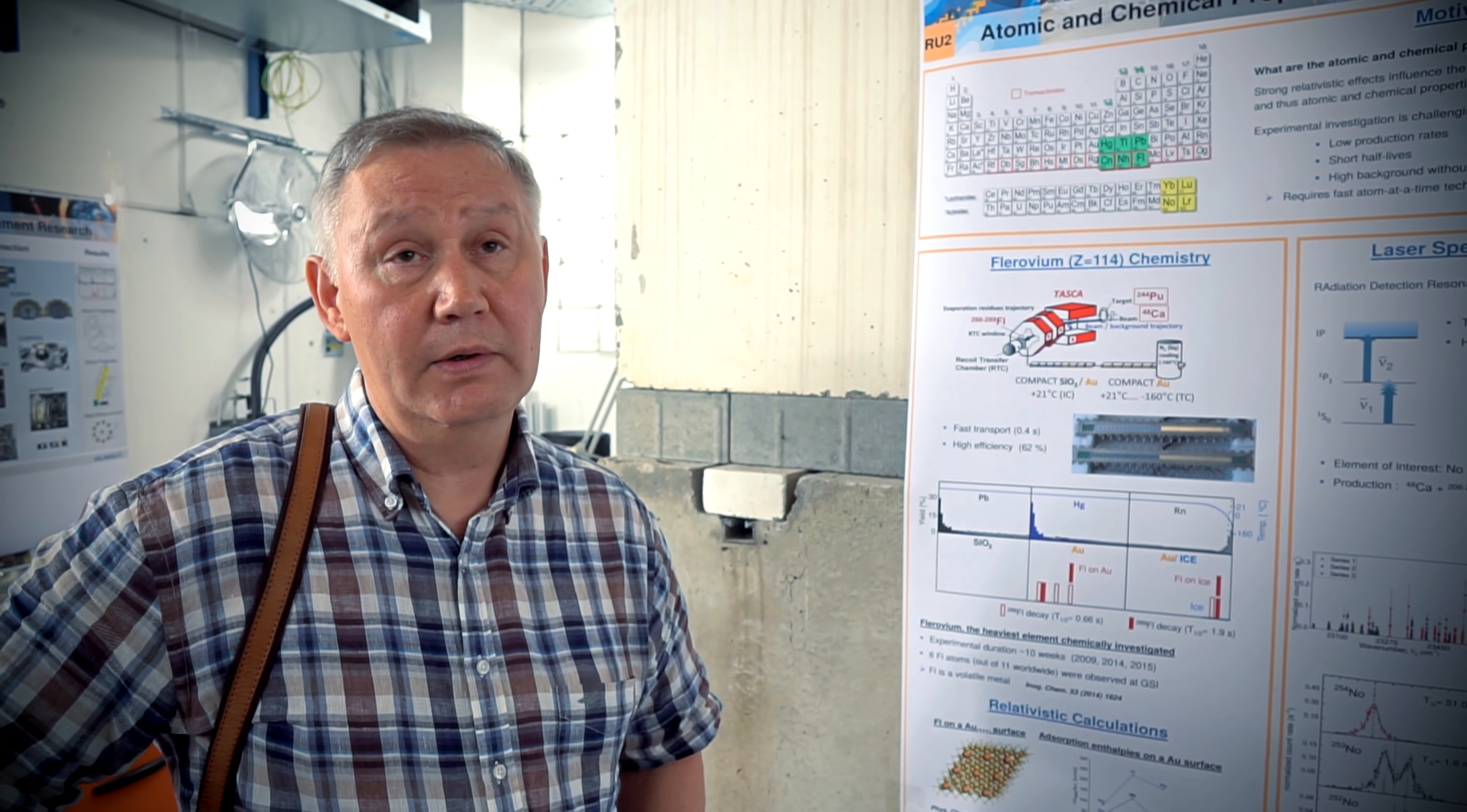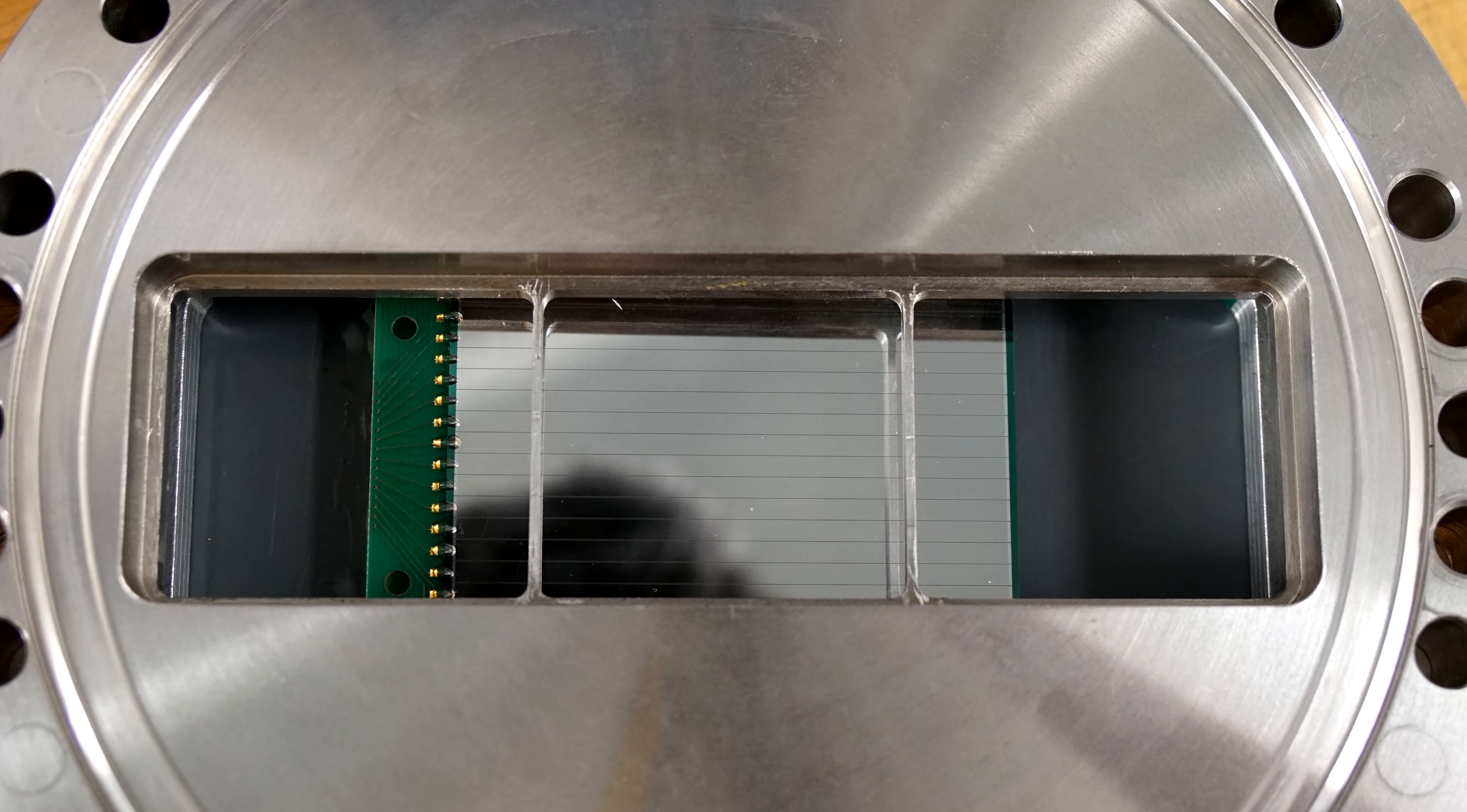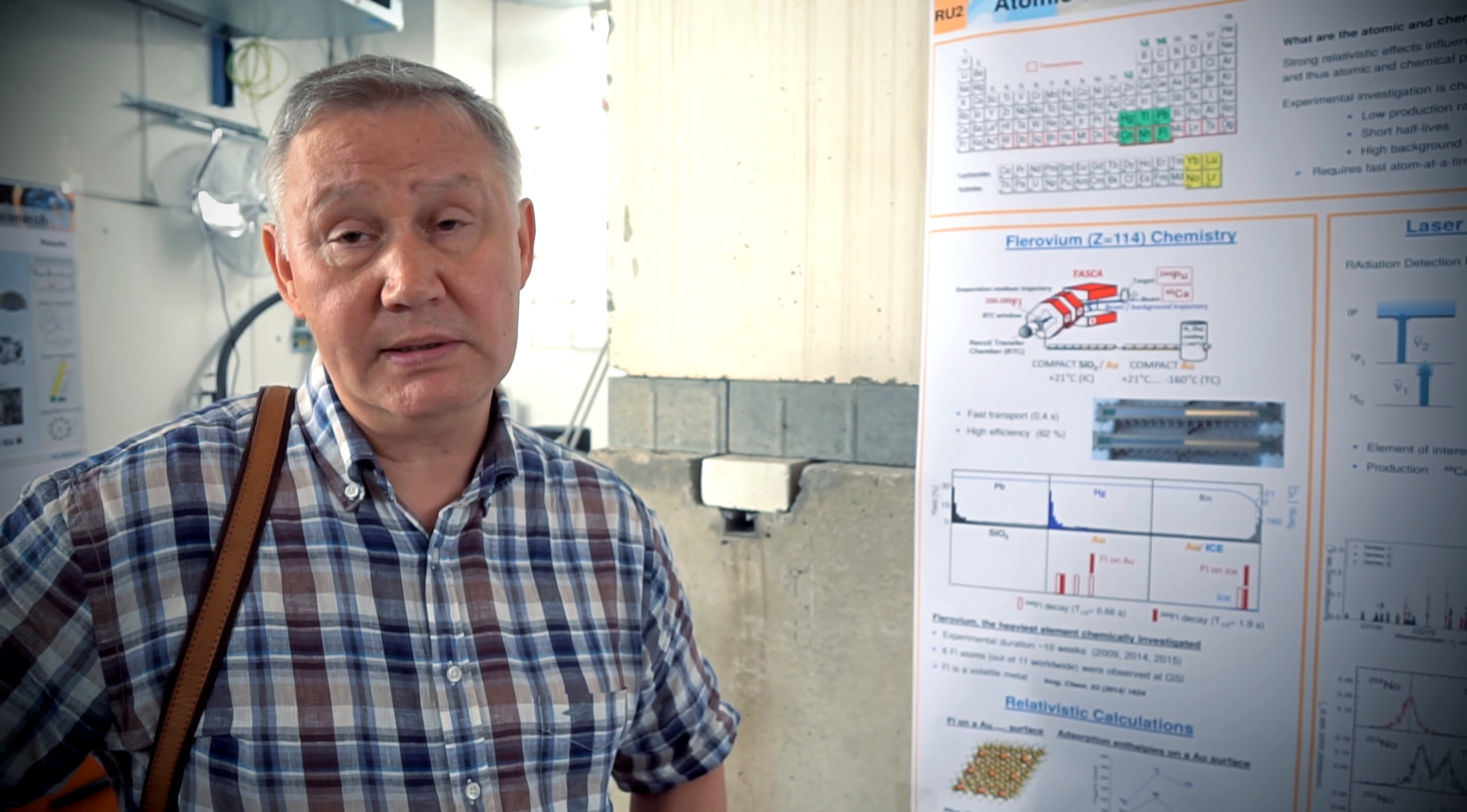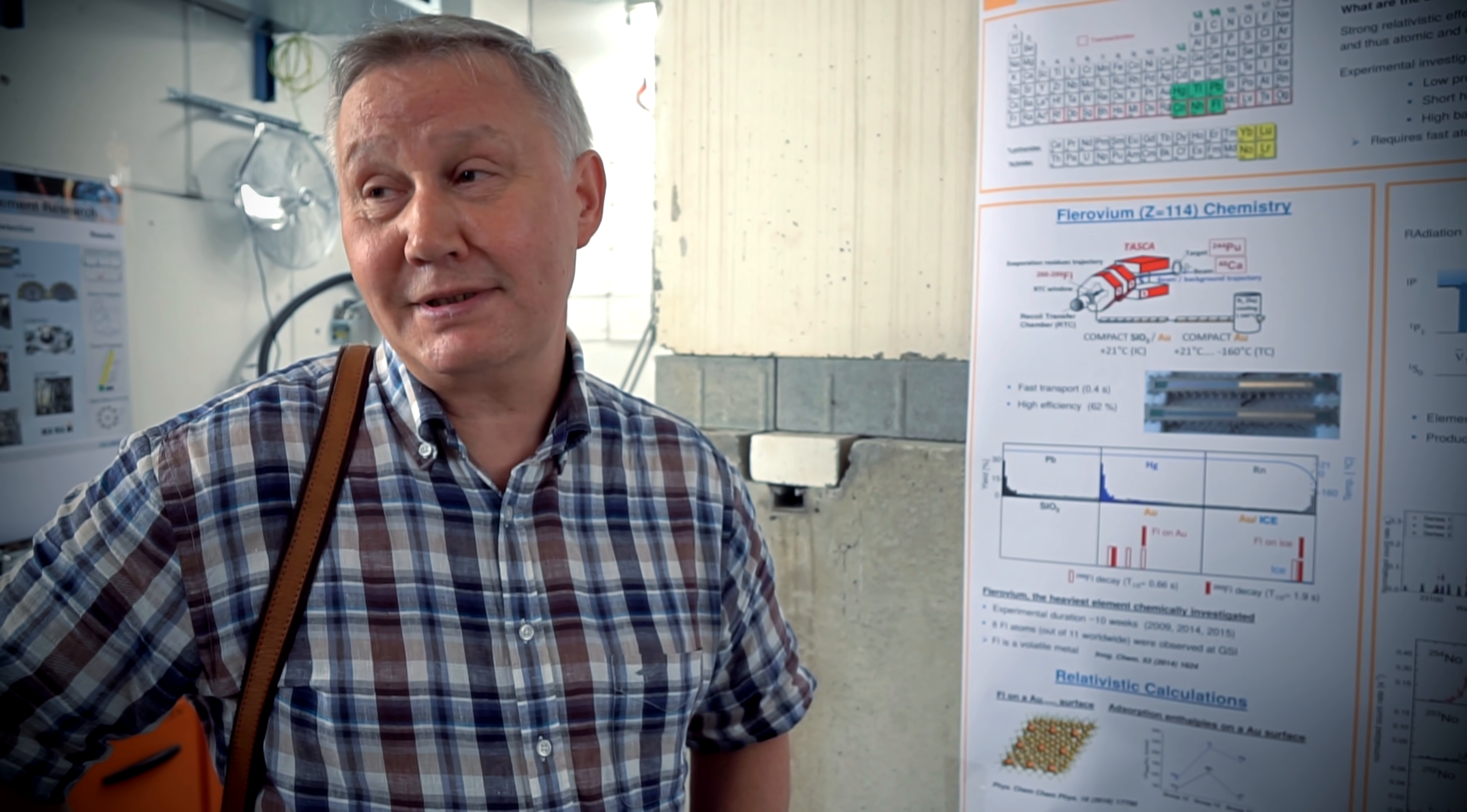If nihonium would be as inert as flerovium, but obviously nihonium is more reactive because it has one unpaired electron. And of course, almost every collision to the wall can give absorption on the wall. That's why the chemical yield is much lower. So we attempted to study nihonium once. We had a 20-day experiment, but we detected no nihonium events in our chemistry detector. So now we will spend some time to optimize our system. And for the next year, we have one month for the second attempt. And we hope it will be successful.